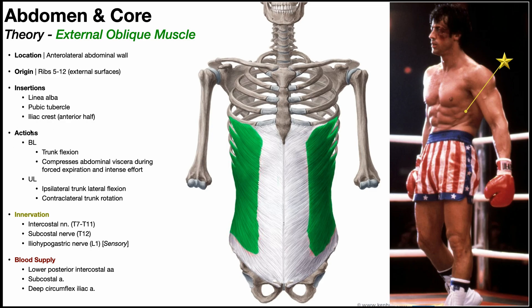For the actions of the external oblique, the specific actions depend on whether the right and left halves are contracting together or just one at a time. For a bilateral contraction, the actions are similar to the rectus abdominis: trunk flexion as in a sit-up, and also compression of the abdominal viscera during forced expiration and intense effort, like deadlifting and performing the Valsalva maneuver. All muscles of the anterior abdominal wall share this function.